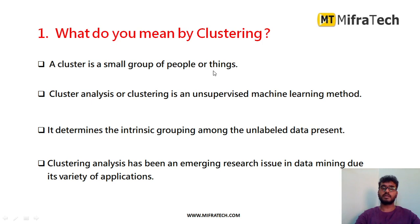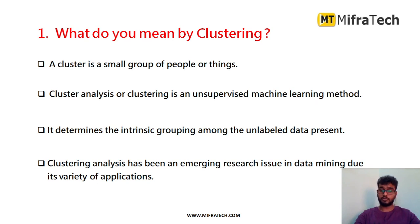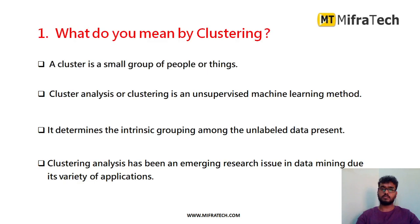Clustering is nothing but a group — a small group of people or things. Clustering analysis is an unsupervised machine learning method. It is unsupervised because we don't know what the final output is in advance. In supervised classification we know the output in advance — like spam or not spam — but in clustering analysis we don't know what the output or cluster will be in advance. That is why it is called unsupervised.